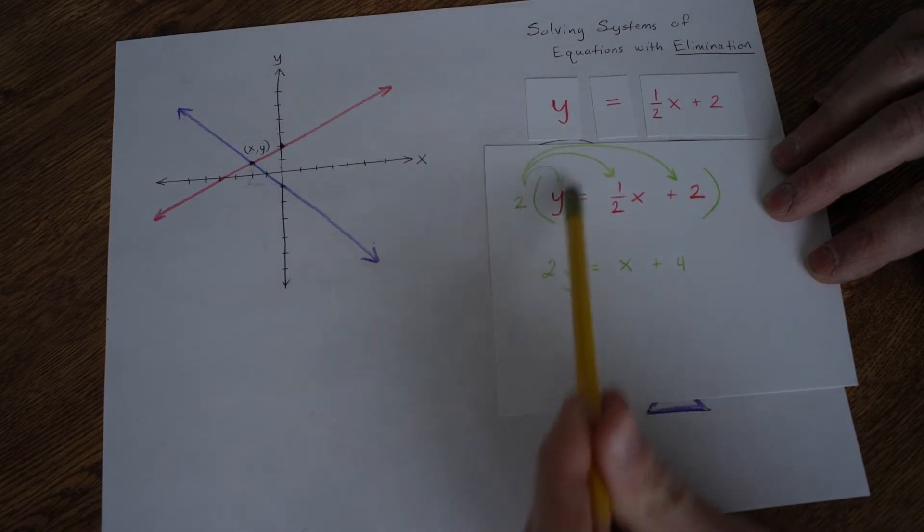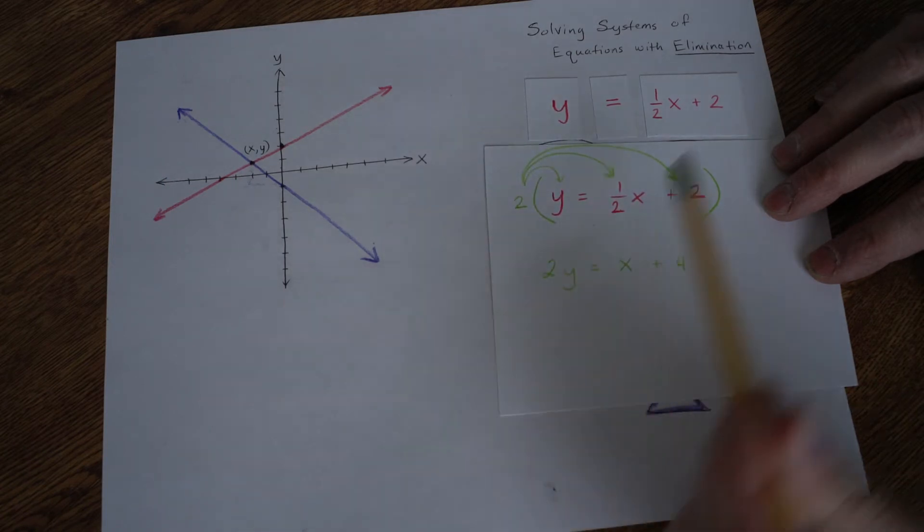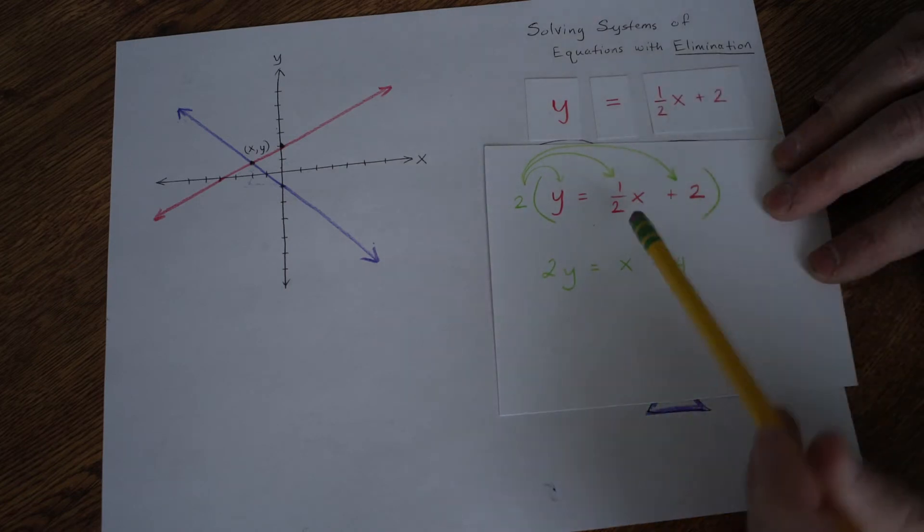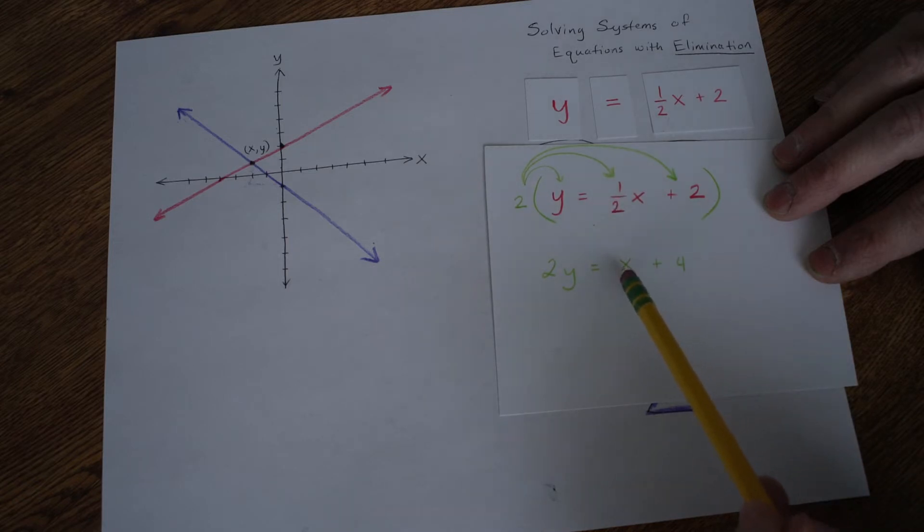I can double this side, double it, 2 times y is 2y, and then I'm going to double everything over here so that it stays balanced. What's 2 times a half? Well, 2 halves make a whole.